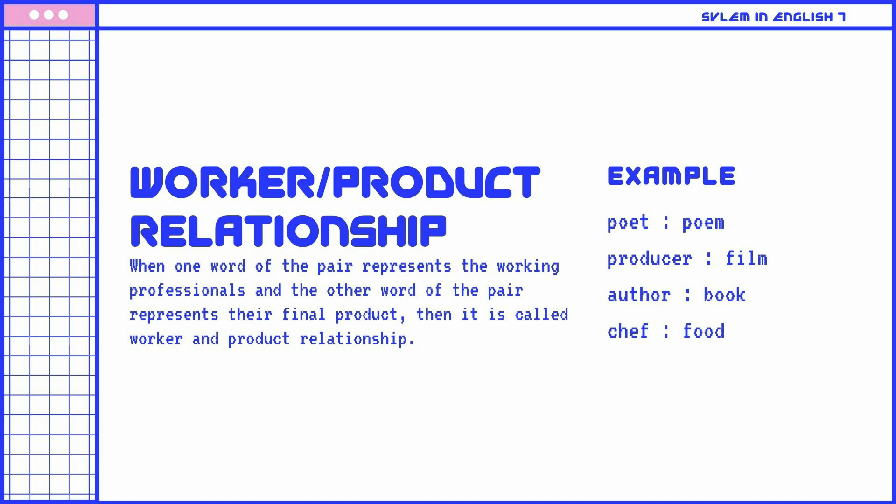Worker-product relationship: When one word of the pair represents the working professional and the other word represents their final product, then it is called a worker-and-product relationship. Examples: Poet is to poem. Producer is to film. Author is to book. Chef is to food.